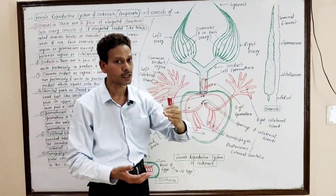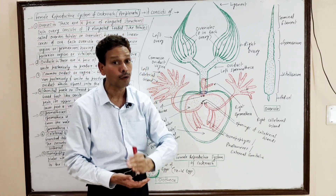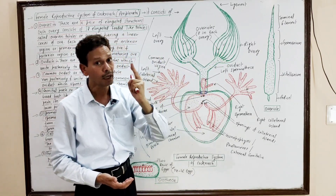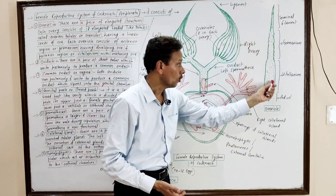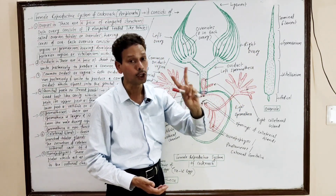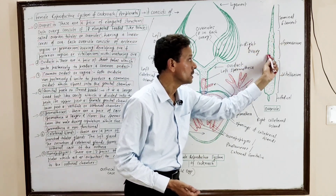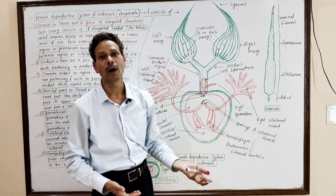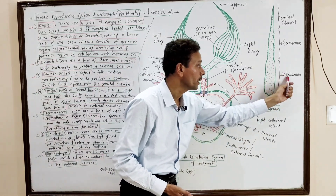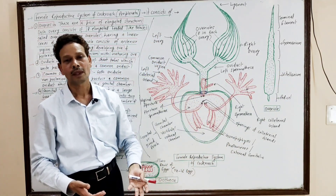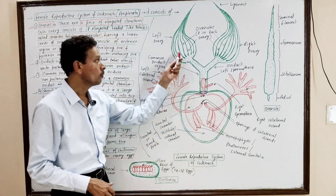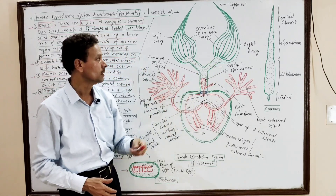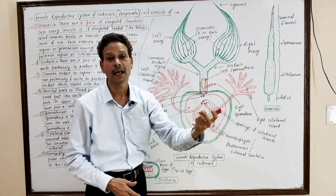In the case of the female cockroach, the female gonads consist of 8 pairs of ovarioles, with 8 elongated beaded-like structures in each ovary. Each ovariole has two important parts: the anterior beaded germarium having rows of developing ova, and the posterior vitellarium consisting of mature ova. Posteriorly, each ovary opens into short tubular oviducts.